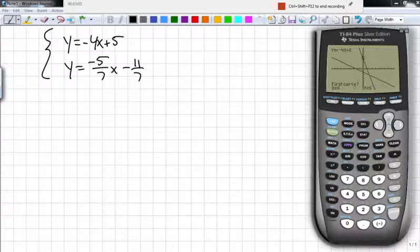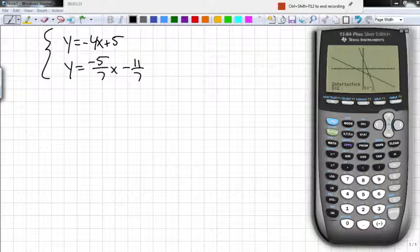Then it gives you this dialog on the screen, and this is one of the few features on the calculator that you really don't need to think too much about the questions it's asking you. It asks you three questions: first curve, second curve, and guess. You can just press enter for the first one, enter for the second one, enter for the third one, and we have an answer. It says our intersection point is 2 comma negative 3.